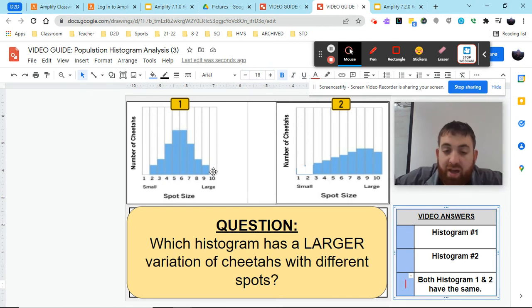but we have to look at where do we have the distribution of each variation. So when we look at the first histogram, we see that there's no distribution at the first variation and the 10th variation. So we don't have any cheetahs with the smallest and the largest spots. We have distribution at two through nine, and the size of the bar doesn't necessarily matter. We know we have cheetahs in those spots.